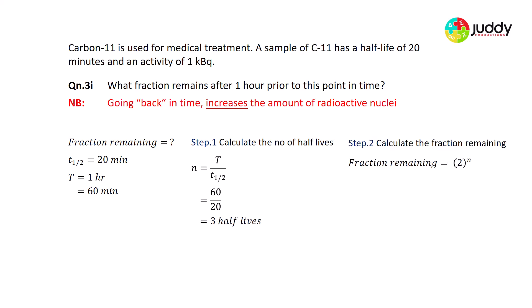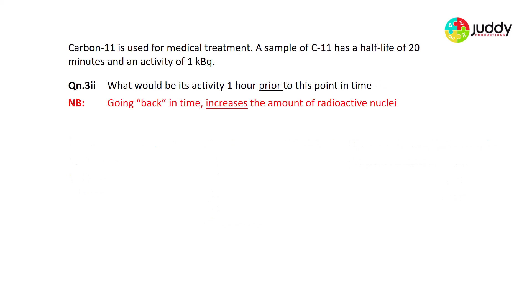Going back in time means we are doubling every half-life rather than halving. So the fraction — or rather the factor — is 2^n. With n = 3, that's 2^3 = 8. It is not a fraction remaining but rather eight times greater than what it is at the present time, because we're going back three half-lives.